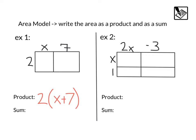Now if we wanted to write this as a sum, we would want to find the area of each individual rectangle. The area of this first rectangle is 2x. That's 2 times x, and the other rectangle is 2 times 7, which would be 14. So if we want to write this as a sum, that would be 2x plus 14. You might notice that that is the same thing if we distributed this product, 2x plus 14.